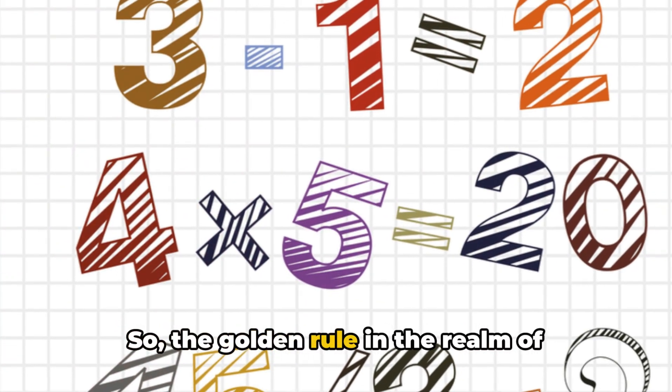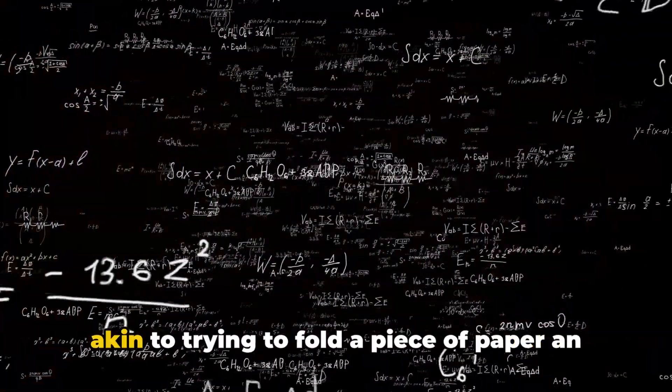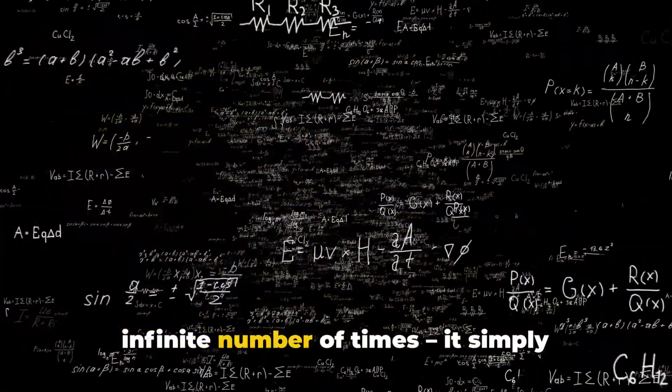So, the golden rule in the realm of mathematics, never divide by zero. It's akin to trying to fold a piece of paper an infinite number of times. It simply doesn't work.